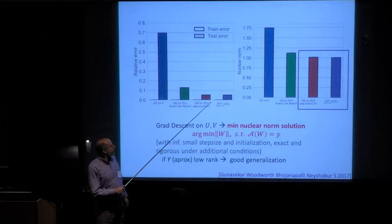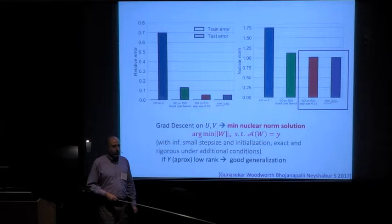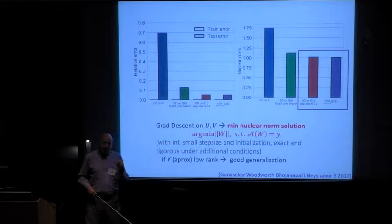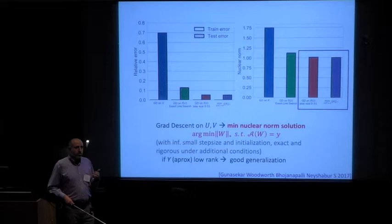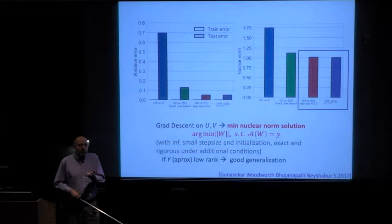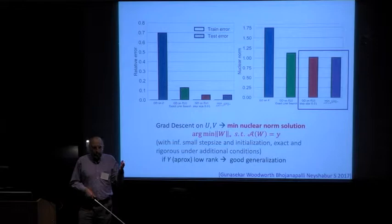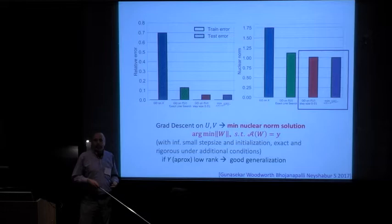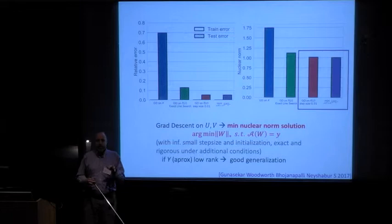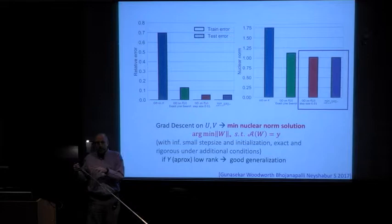What seems to be happening is that the solution we're finding is the minimum nuclear norm solution. If we do gradient descent with infinitesimally small step sizes and start infinitesimally close to the origin, we converge to the minimum nuclear norm zero-error solution. Note this statement alone doesn't explain generalization — it's only a statement about optimization. We still need a separate piece: that we already know finding a minimum nuclear norm solution is good for generalization when the matrix is approximately low rank. We separated it into two parts: what you're actually doing, and then a separate theory of why minimizing nuclear norm is good.